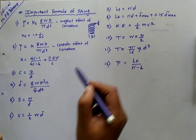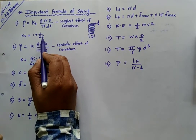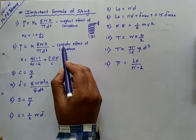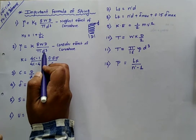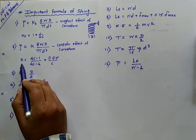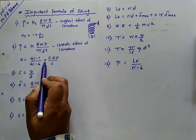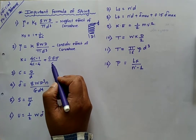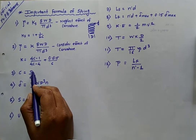Ks is calculated using the formula: 1 + 1/(2c), where c is the spring index. Whenever the curvature effect in a spring is to be considered, then shear stress is calculated using: tau = K × 8WD / (π d³). Here K is calculated using the Wahl's formula: (4c − 1)/(4c − 4) + 0.615/c, where c is the spring index.